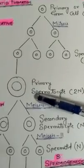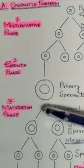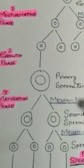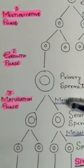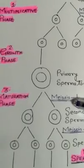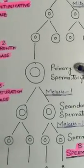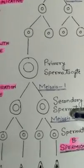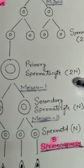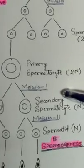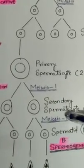This cell enters the next phase — the maturation phase, also called the meiotic phase — because meiosis is occurring here. This phase is characterized by meiosis. The diploid primary spermatocyte undergoes meiosis I, also called heterotypical division, and forms two haploid secondary spermatocytes.